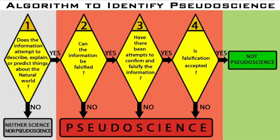Information that is infallible, that cannot be metaphorically defeated, is not falsifiable, and information that is not falsifiable is pseudoscience. If the answer to this second question is no, then the information is pseudoscience. If the answer to this question is yes, then proceed to the next question.